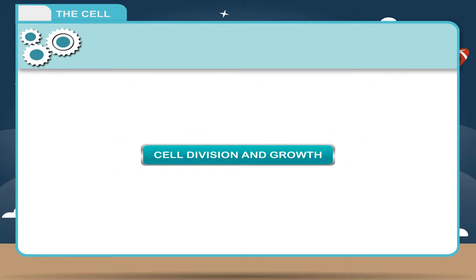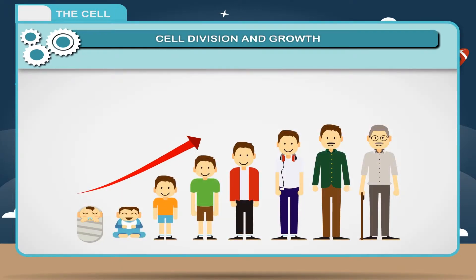Cell Division and Growth. As you know, the living beings reproduce their offspring and also grow in size. It is one of the most important characteristic features of living beings.